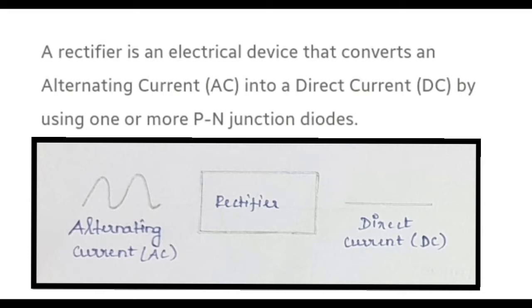We use the PN junction diode in the rectification process. The rectification process converts alternating current into direct current. The PN junction diode allows electric current in the forward bias condition and blocks it in the reverse bias condition. This unique property is why we call it a rectifier.